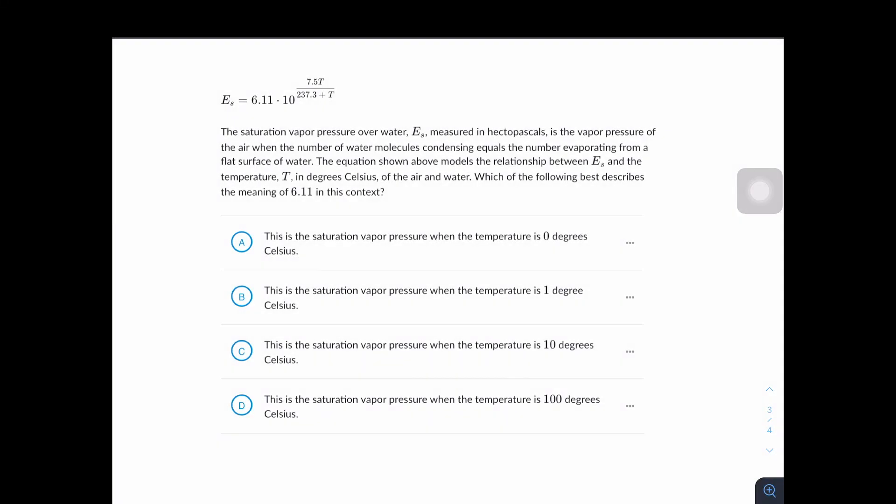Saturation vapor pressure over water Es, measured in hectopascals, is the vapor pressure of the air when the number of water molecules condensing equals the number of vapor evaporating from a flat surface of water. The equation shown above models the relationship between Es and the temperature T in degrees Celsius of the air and water. Which of the following best describes the meaning of 6.11 in this context? So we're given this equation right here and it wants us to find the meaning of 6.11.